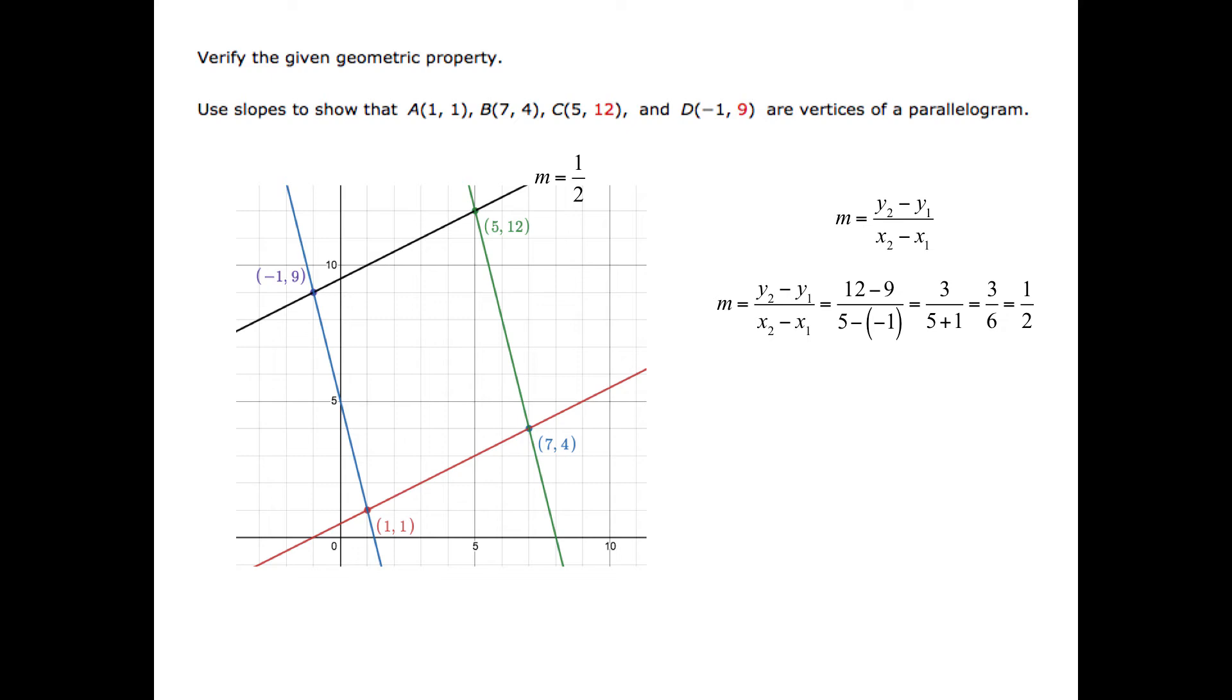Now let's find the slope of the line that passes through the points 7 and 7, 4. So again, we'll use the slope formula and substitute these values into the formula. We would find 4 minus 1 divided by 7 minus 1, which would give us 3 divided by 6, and again simplify to 1 half. So these two lines do indeed both have the same slope. They both have a slope of 1 half, so they are parallel.